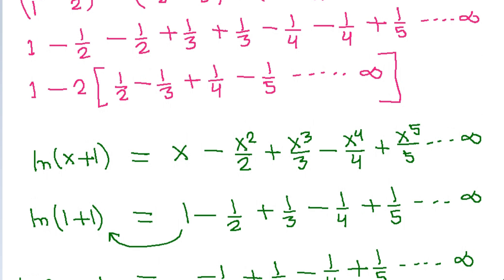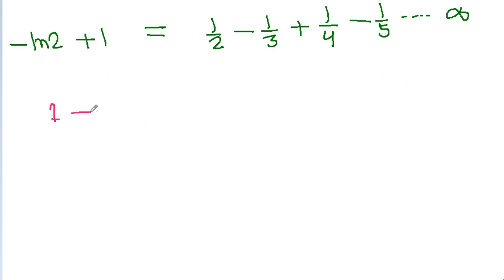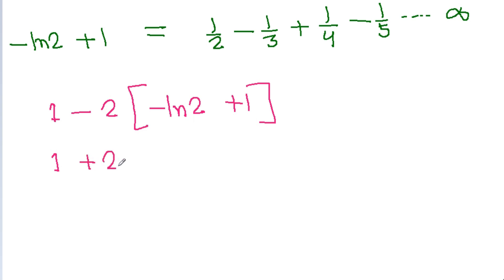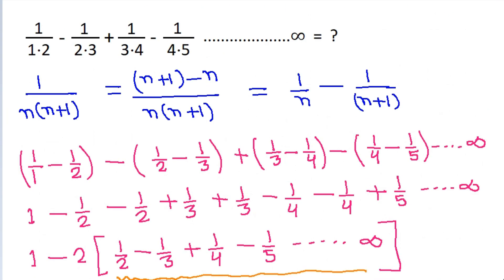So we get 1 - 2(1 - ln2). This equals 1 - 2 + 2ln2 = 2ln2 - 1. And 2ln2 = ln4, while 1 = ln(e), so the answer is ln(4/e).